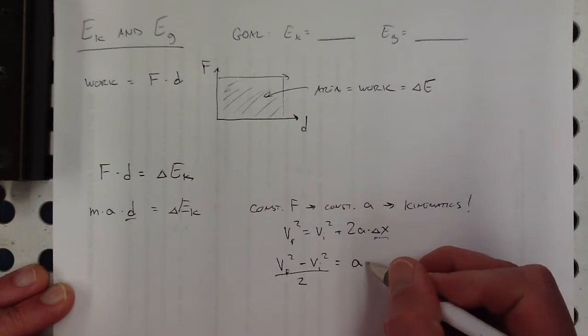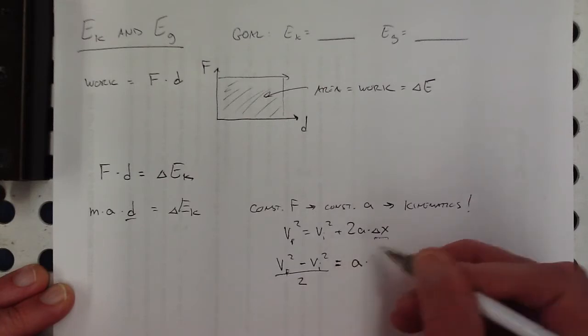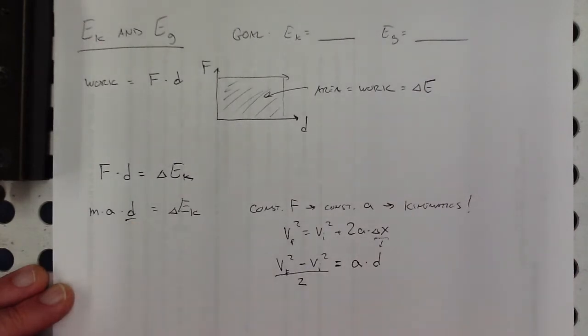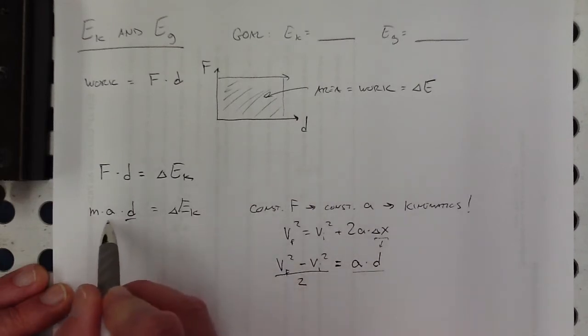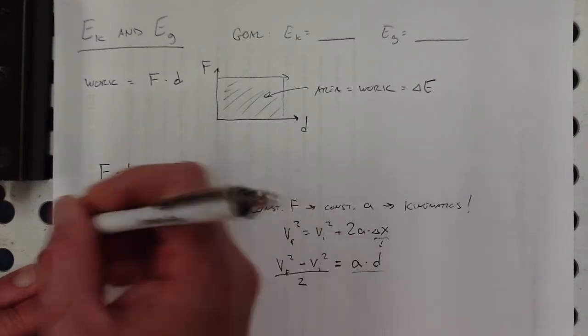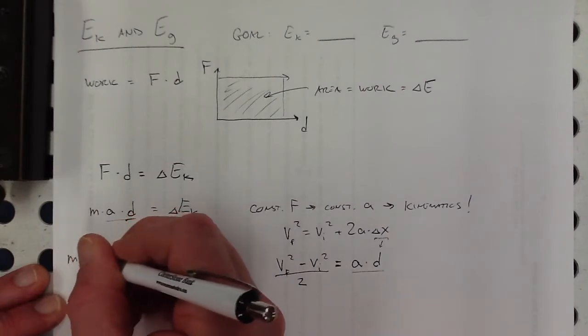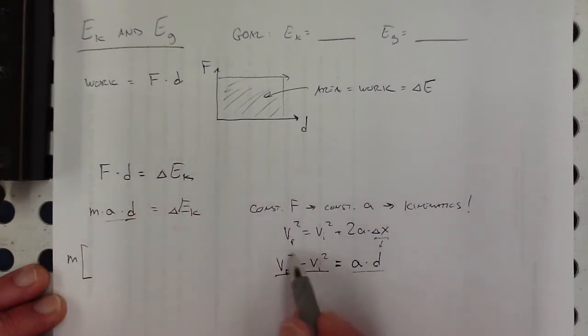Subtract that over to the other side. And I'm also going to divide by two. And then over here, what's left behind is a times, and instead of writing delta x, I'm just going to write it as d, so it matches up to what I have over here. So now, look at what we got. We've got ad equals this, and I have an ad in this equation here. So I'm going to substitute